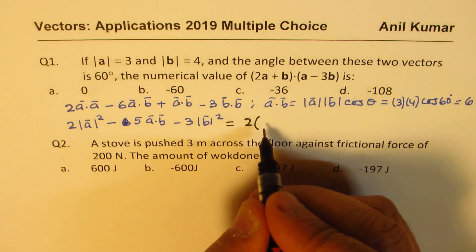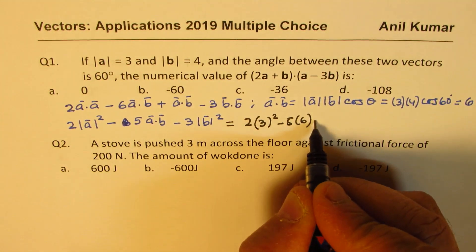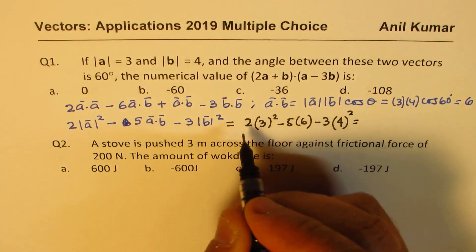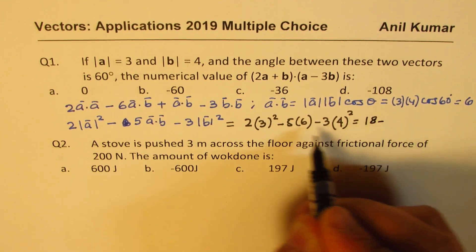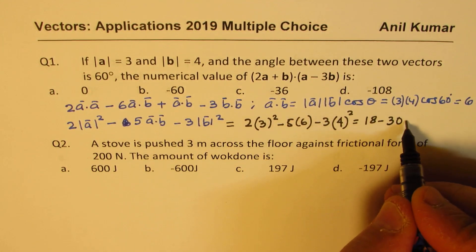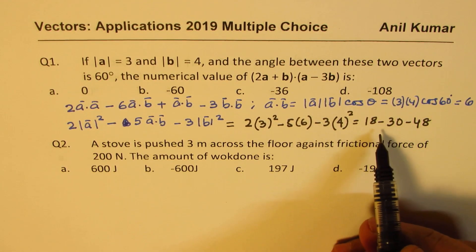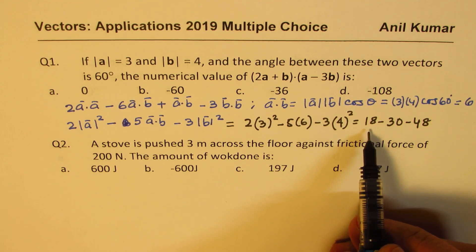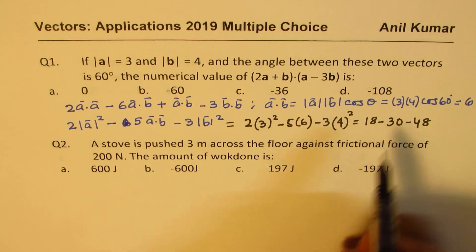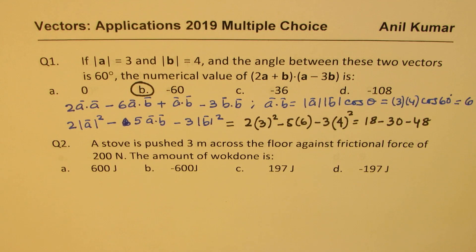Now we can place these values here and find the answer. So 2 times square of 3 minus 5 times 6 minus 3 times square of 4. So that is 9 times 2, 18 minus 30 minus 16 times 3. So from 48 when you take away 18, you get 30 and minus 30 minus 30 will give you minus 60. So option B is the right option.